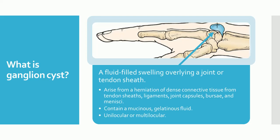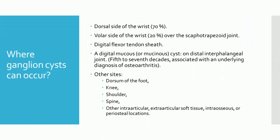The cysts can be unilocular or multilocular. The most common location for ganglion cysts is the dorsal side of the wrist, in 70% of cases. Most dorsal wrist ganglions can be traced by their stalk as originating from the radiolunate ligament. The second most common location is the volar side of the wrist, in 20% of cases, over the scaphotrapezoid joint.